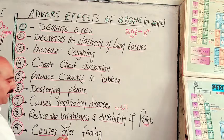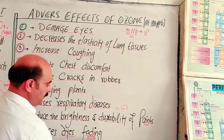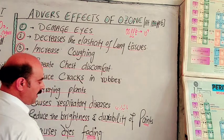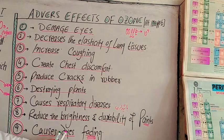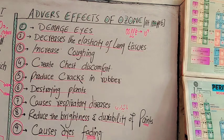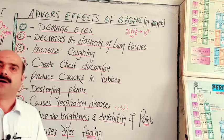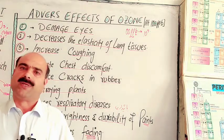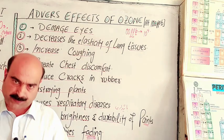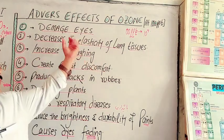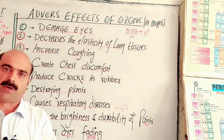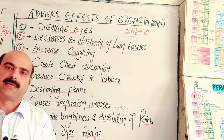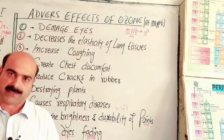Ozone causes dyes fading — the brightness and color of dyes and paints are reduced. It degrades building materials such as furniture, tiles, iron gates, and windows. In summary, these were the basics of ozone acting as a pollutant in the lower atmosphere, and its adverse effects on plants, animals, humans, and building materials. Thanks for watching.